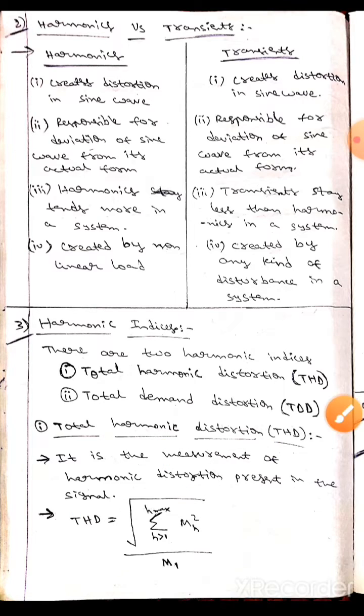The formula of THD is root over sigma h greater than one to h max, Mh square by M1.